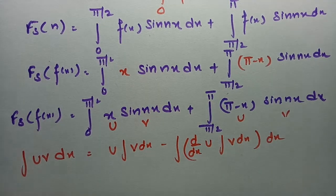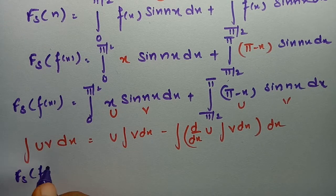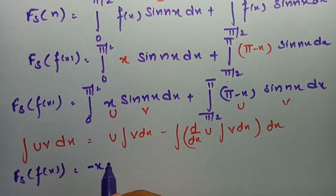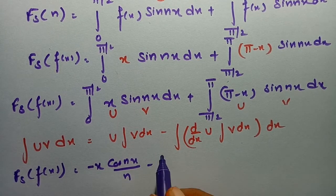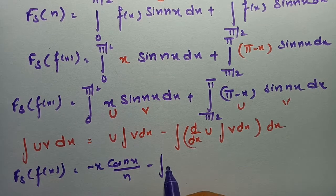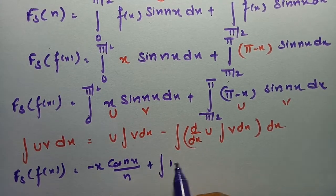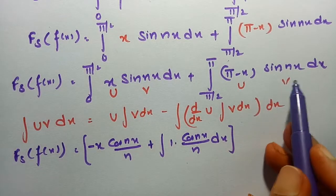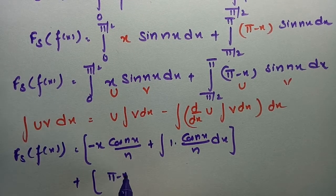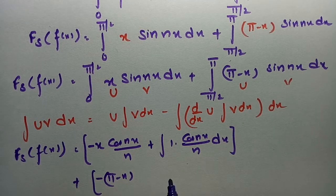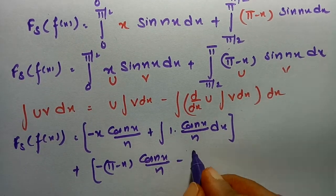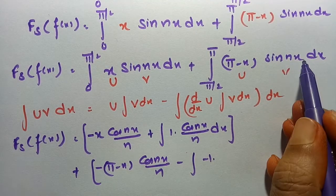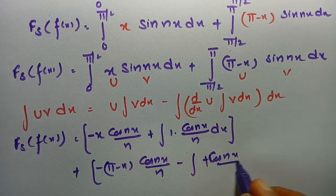Applying the formula: for the first integral, u = x (left as is), and integrating v = sin(nx) gives −cos(nx)/n. The derivative of u is 1, so we subtract the integral of 1 · (−cos(nx)/n) dx. For the second integral, u = π − x, integrating sin(nx) gives −cos(nx)/n. The derivative of (π − x) is −1, so we subtract the integral of (−1) · (−cos(nx)/n) dx.